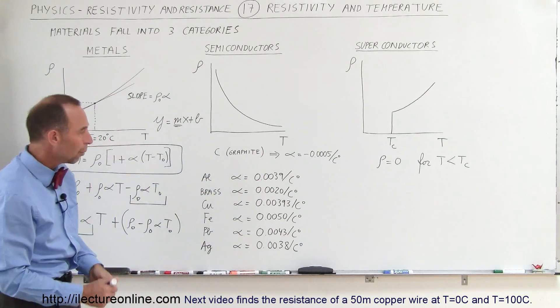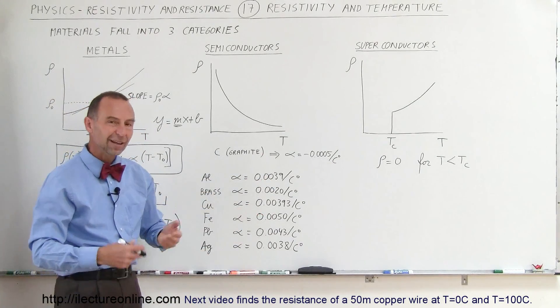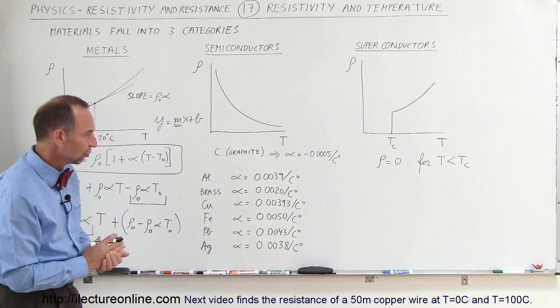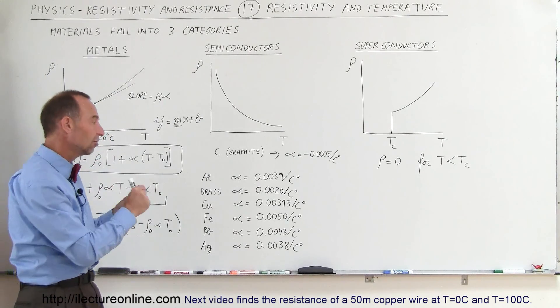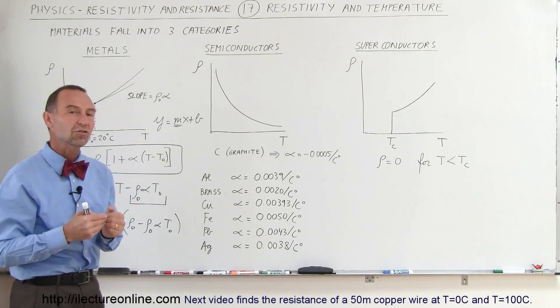They all range anywhere from 0.002 to about 0.005, averaging around maybe 0.004, which means there's a 0.4% change in the resistivity for every degree centigrade change of the temperature of the metal.